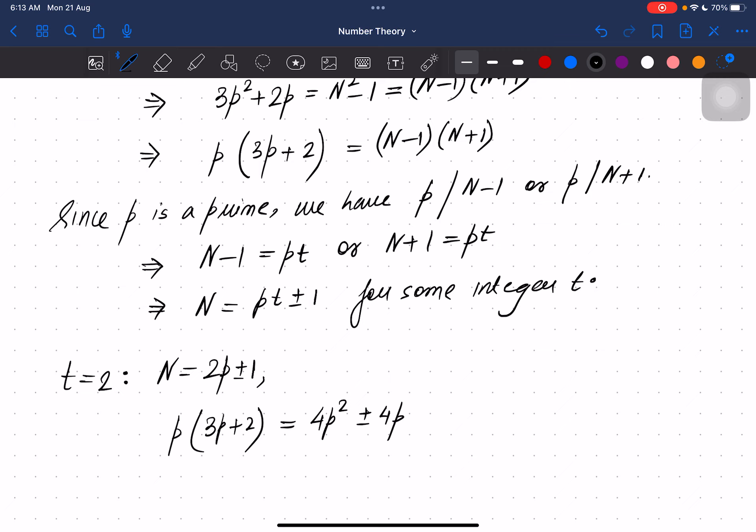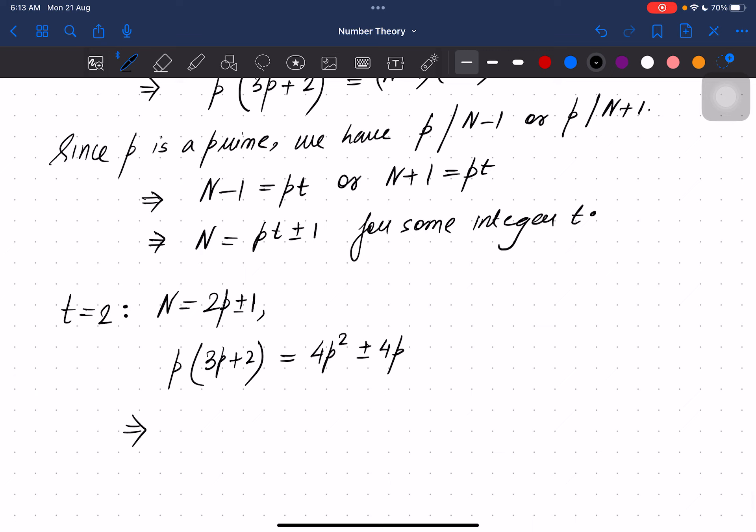We can cancel p from both sides. Then I have 3p + 2 equals 4p ± 4. I can send 4 to the other side and it becomes p. So p equals 6 because the other case will become negative which is not possible. But this is not a prime.